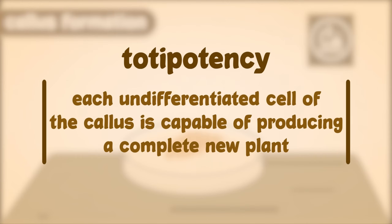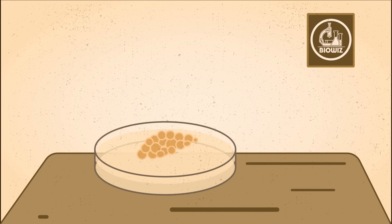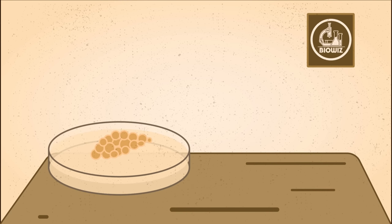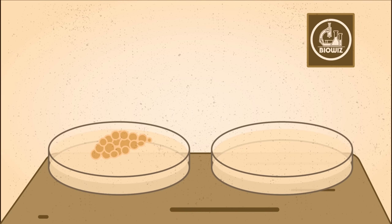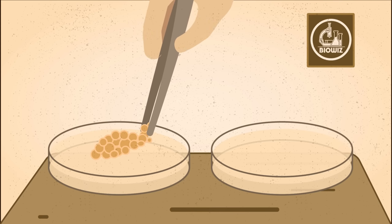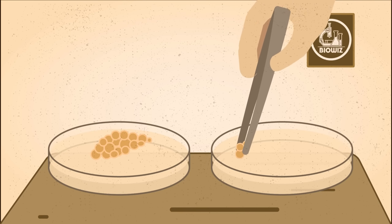The cells of callus are totipotent — that is, each cell is capable of producing a completely new plant body. These cells can be separated into any number of parts to produce new plants.